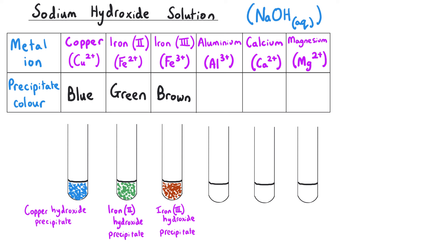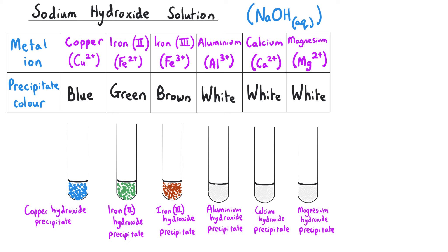Then there are three metal ions — aluminium 3+, calcium 2+, and magnesium 2+ — and they all form white precipitates when sodium hydroxide solution is added to them. All of these precipitates have something in common: the precipitate produced is a metal hydroxide. Copper produces copper hydroxide, iron 2+ produces iron 2 hydroxide, iron 3+ produces iron 3 hydroxide, aluminium makes aluminium hydroxide, and calcium and magnesium produce calcium hydroxide and magnesium hydroxide respectively.